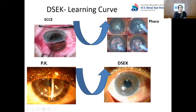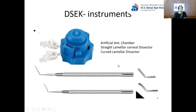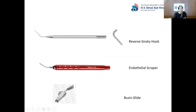These are the instruments required. This is the artificial anterior chamber on which the donor tissue is mounted for dissection. These are the lamellar dissectors — the straight and the curved ones — used for dissection of the donor tissue. This is the reverse Sinskey hook and the endothelial scraper, used for the scoring of Descemet's membrane from the patient. And this is the Busin glide — a variety of endoglides are used to insert the dissected donor lenticule.